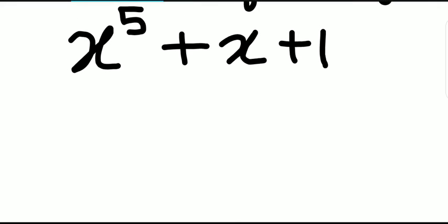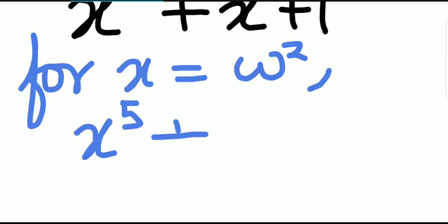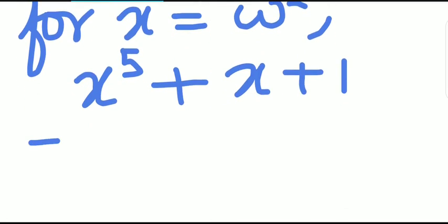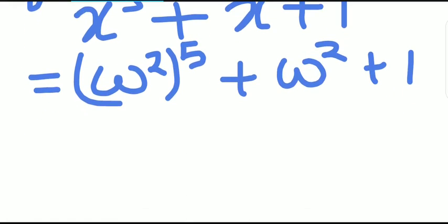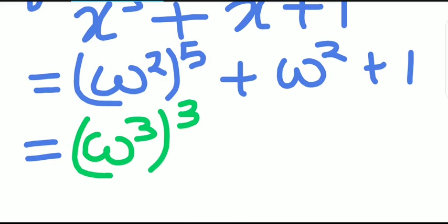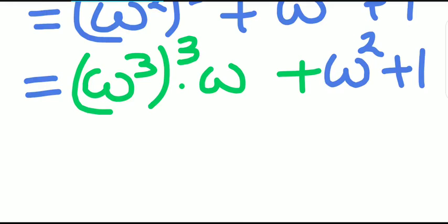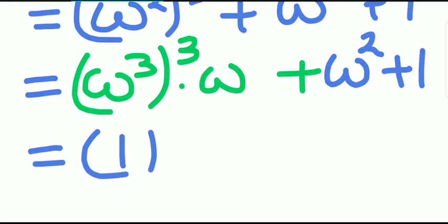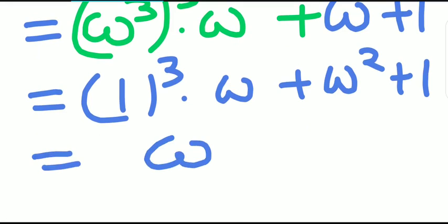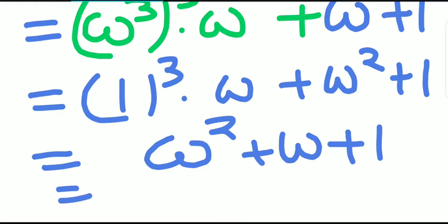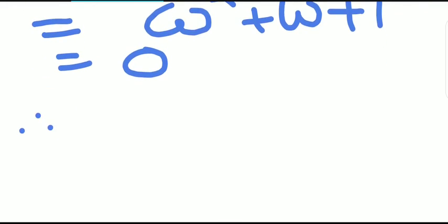Let us verify. For x equal to ω squared, x to the power 5 plus x plus 1 equals ω squared to the power 5 plus ω squared plus 1. Now, ω squared to the power 5 is ω to the power 10, which equals ω cubed cubed into ω, that is ω to the power 9 into ω. Since ω cubed equals 1, this is 1 into ω plus ω squared plus 1, which equals 0. Therefore, x minus ω squared is a factor.